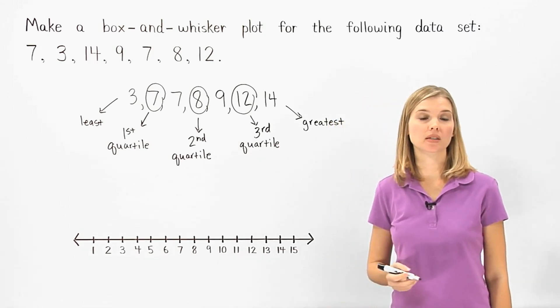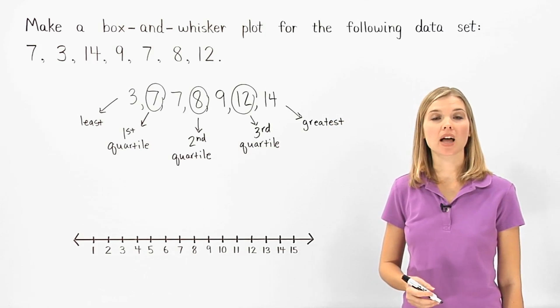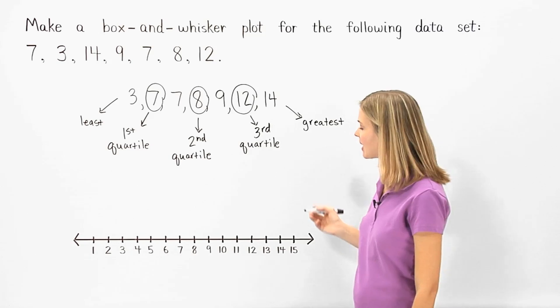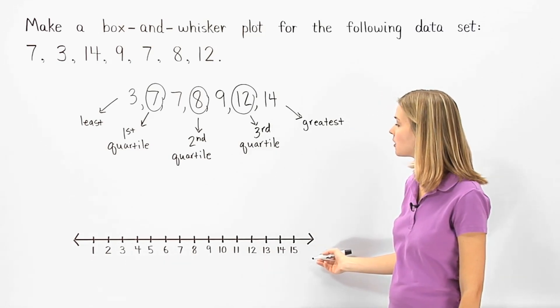Now we're ready to make our box and whisker plot. So we use a number line that has an appropriate scale for our given data, which in this case is a number line that goes from 1 to 15.